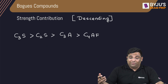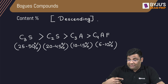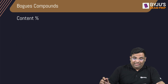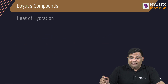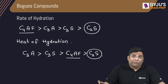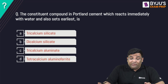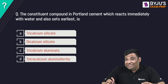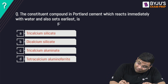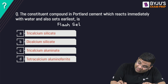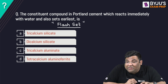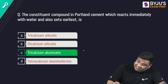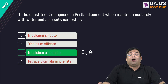So there are four key objective questions: content percentage (descending or ascending), strength contribution, heat of hydration, and rate of hydration. Practice question: Which constituent compound in Portland cement reacts immediately with water and sets earliest (flash set)? The answer is Tricalcium Aluminate — C3A — which is responsible for the flash set.